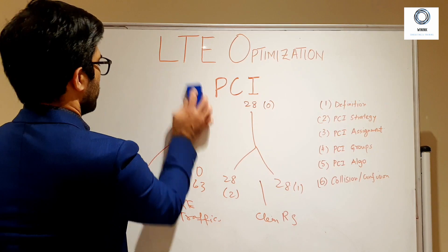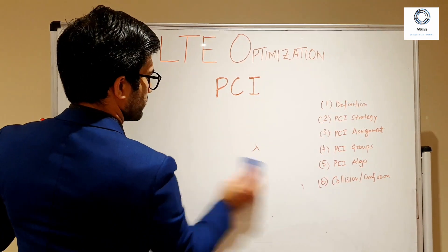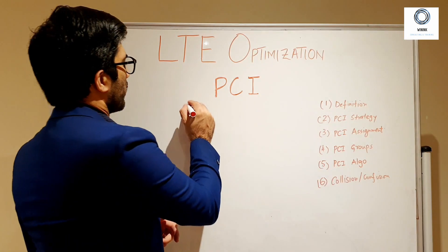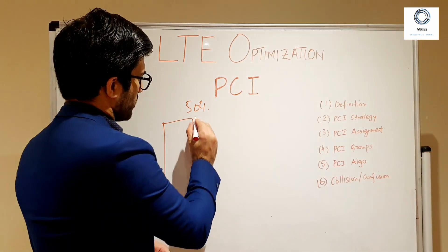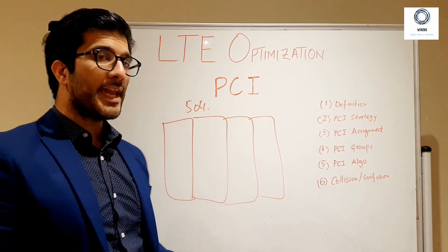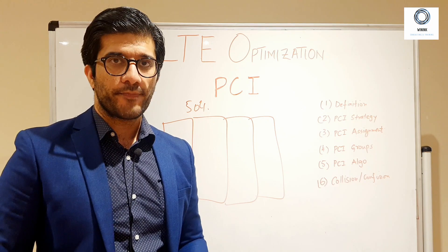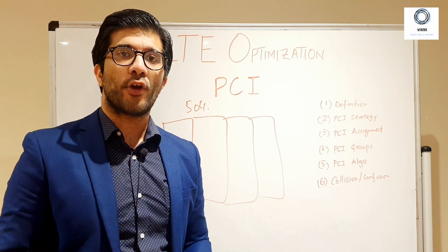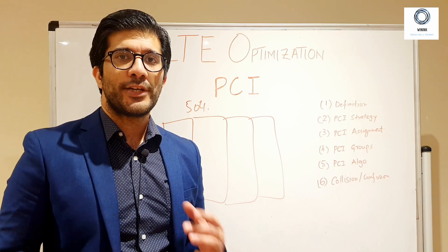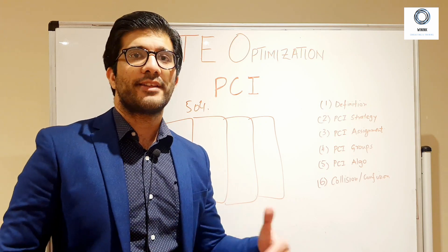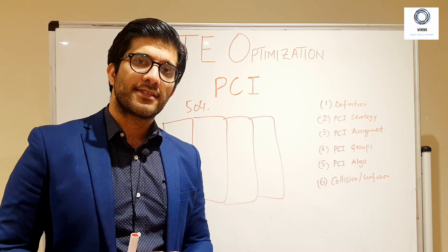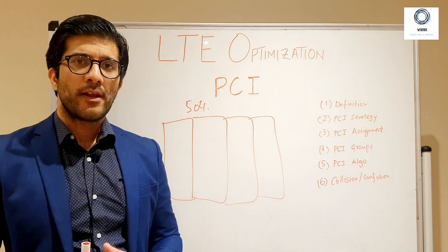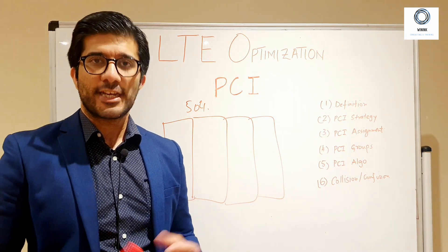In an actual LTE network, we divide the 504 PCIs into four groups, each containing 126 PCIs. Of those 126, 120 are allocated to particular cells and six are reserved for network growth. For example, if you are deploying a network with 6,000 sites, you use 120 PCIs in one area, 120 in the next, and so on, keeping those six PCIs for expansion sites, additional capacity, or future coverage additions.